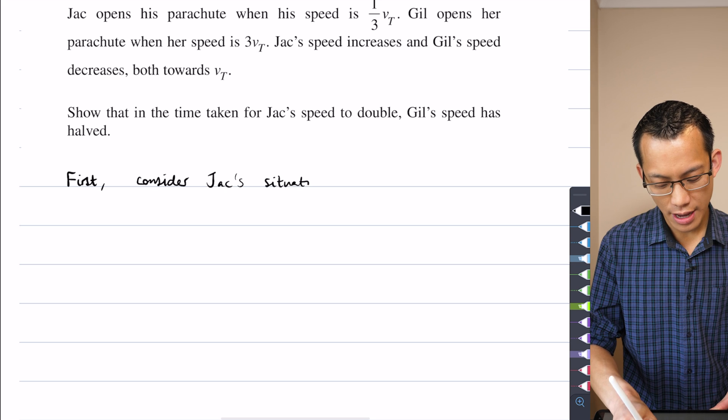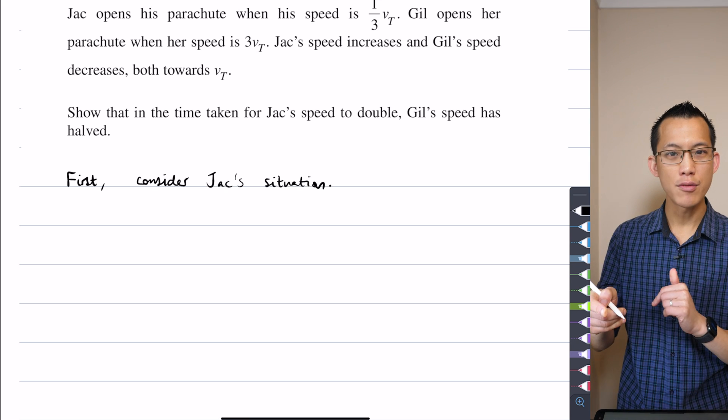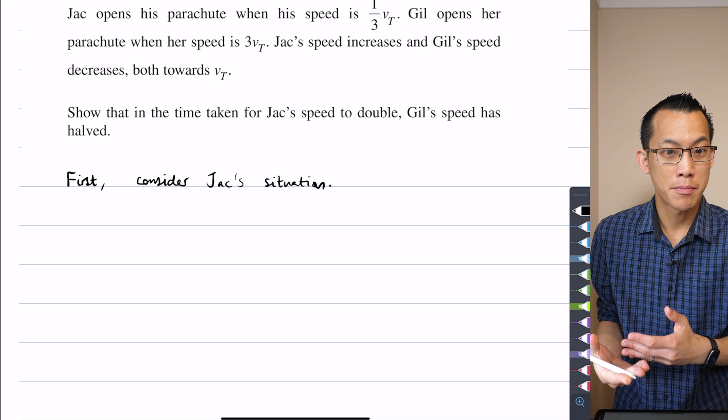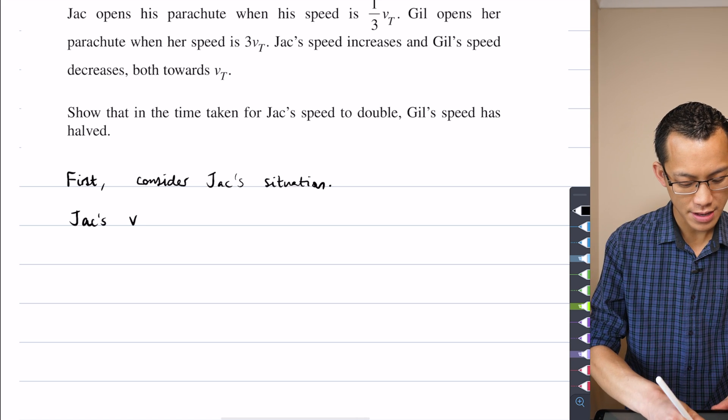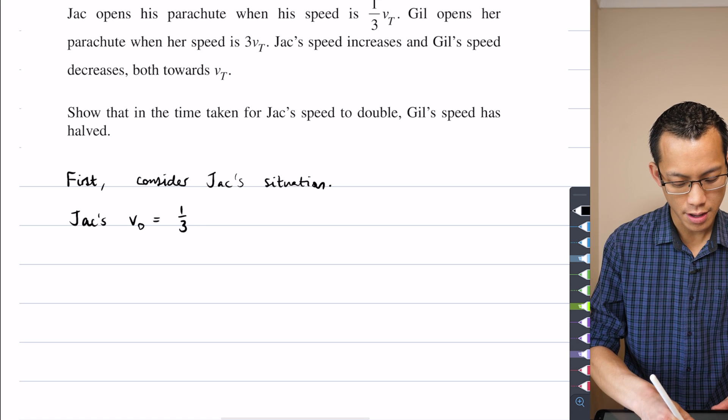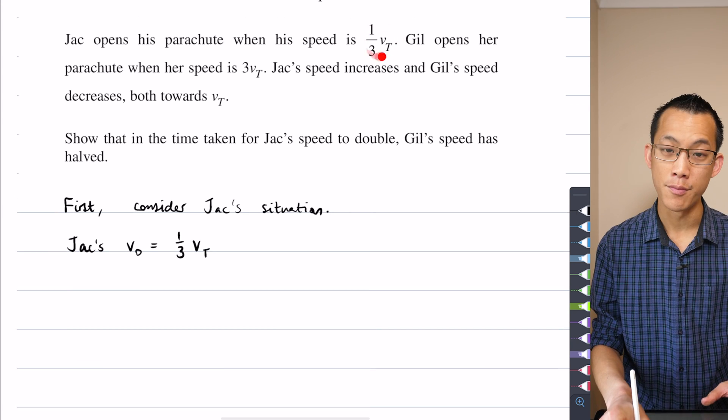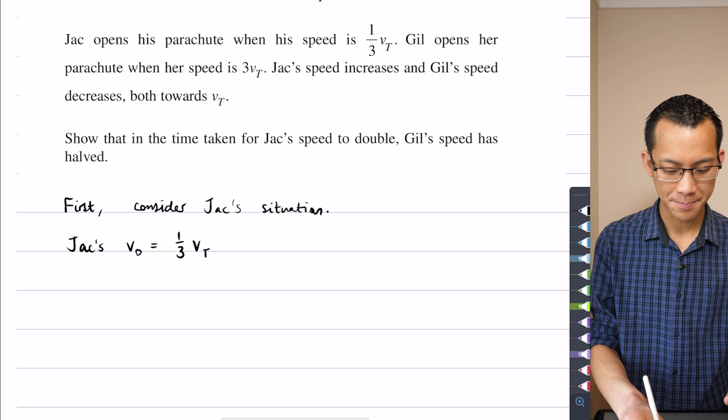When I think about Jack's situation, Jack's V0 is the one-third VT that was provided in the question. So I will write Jack's V0 equals a third of VT, and you can see me getting that from this data in the question right there.